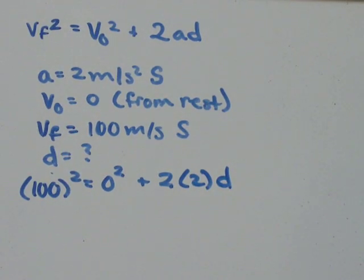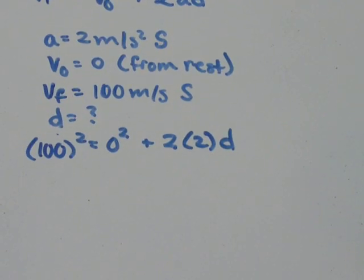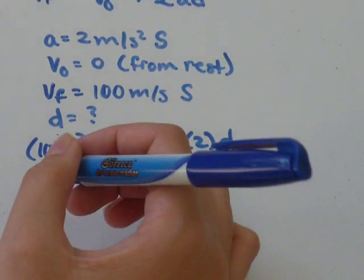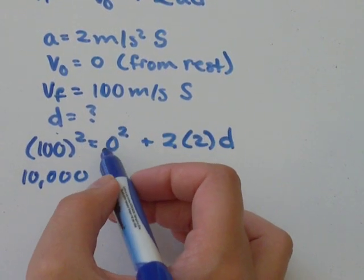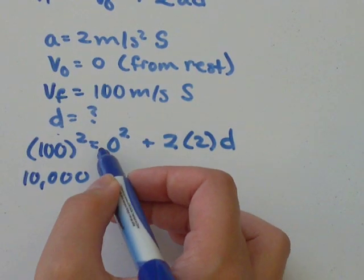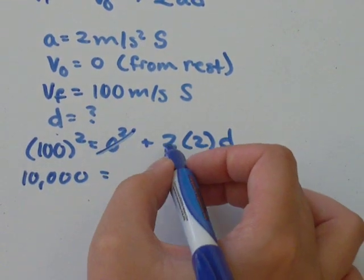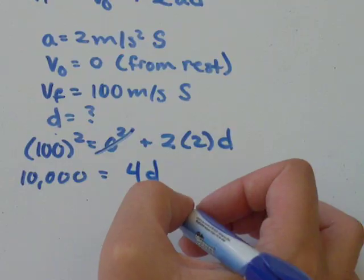So all you have to do then is solve it. So 100 squared is equal to 10,000. 0 squared is just 0, which is equivalent to nothing. So I'm just going to cross that out. 2 times 2 is 4, and D.